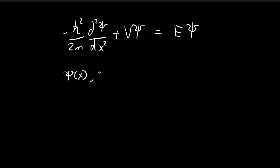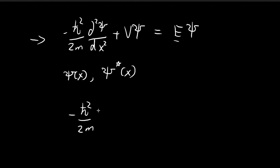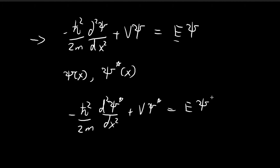We can show that the conjugate of ξ(x) is also a solution to the time-independent Schrödinger equation for energy level E. We can see that because we take this expression and take the conjugate of both sides. After doing so, the conjugate of ξ(x) also satisfies the time-independent Schrödinger equation for energy level E. So if ξ(x) is a solution, then the conjugate is also a solution.